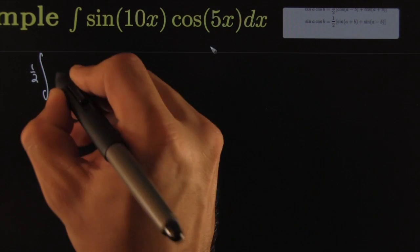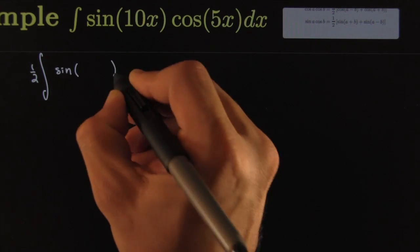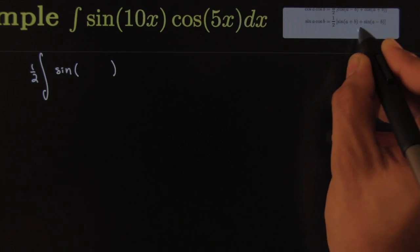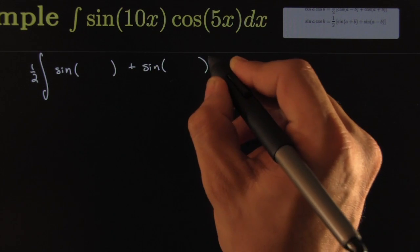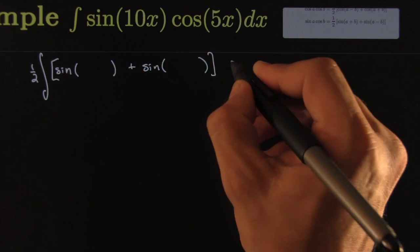Sine, I need to do sine of the sum of them, and then I need to do plus sine of the difference. And of course all this is times the differential dx.